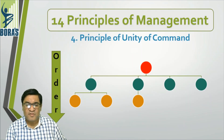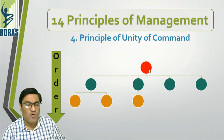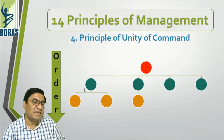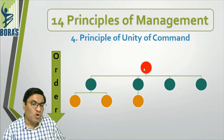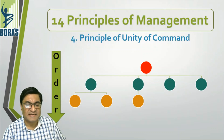To understand the principle of Unity of Command, we can look at a diagram. In it, Red gives command to Green, and Green gives command to Yellow. Yellow knows that Green is their superior, and Green knows that Red is their superior. Orders flow from Red to Green, and from Green to Yellow. When people work according to these orders, we call it Unity of Command.